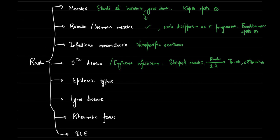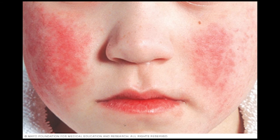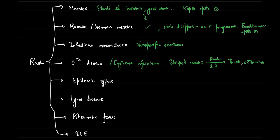Fifth disease or erythema infectiosum has a typical rash which looks like slapped cheeks. It is caused by Parvovirus B19 and affects children between 3 and 12 years. Remember that this rash appears after the fever has resolved, and that a more diffuse rash appears on the trunk and extremities the next day. Adults will also have polyarthritis, and pregnant females will be prone to developing fetal hydrops.